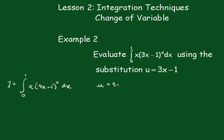Now u equals 3x minus 1, so du/dx equals 3, which means dx equals 1 third du.